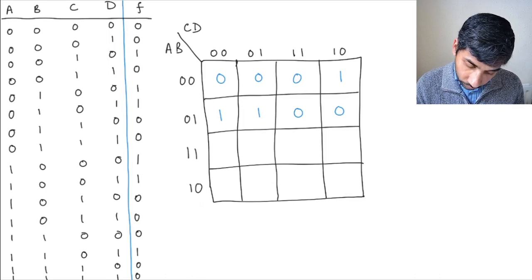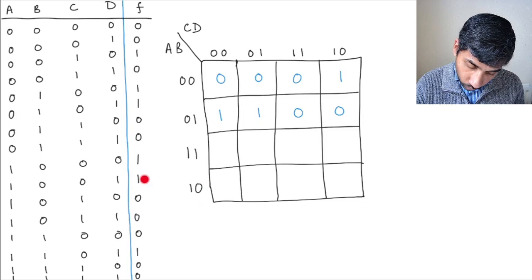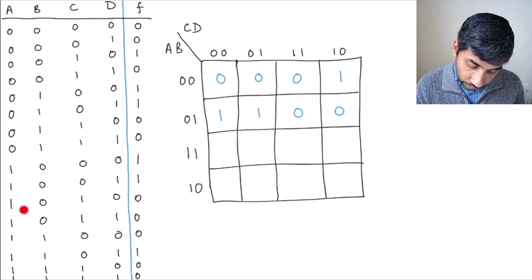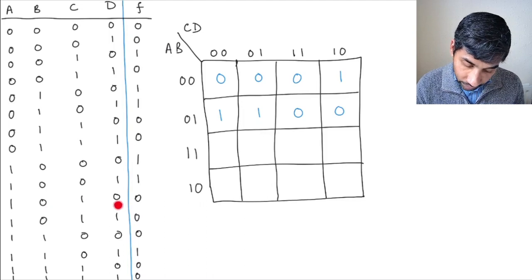So you have 1 going here, 1 going here, and then this 1, this 0 goes at this point. Because A and B are 1, 0, and C and D are also 1, 0 here.